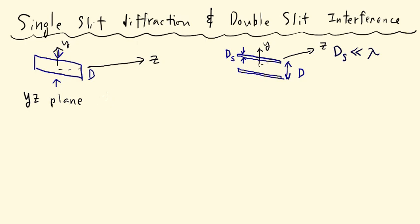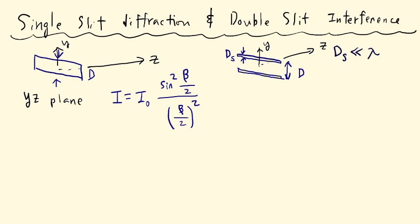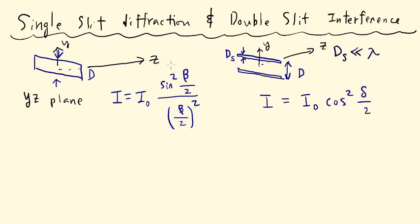Let's write down the formula for single slit diffraction: I equals I-zero times sinc squared of beta over two. That's the formula for a single slit. For the double slit, a similar expression except it's a cosine: I equals I-zero times cosine squared of delta over two. So we have two formulas, this one for the single slit and this one for the double slit.